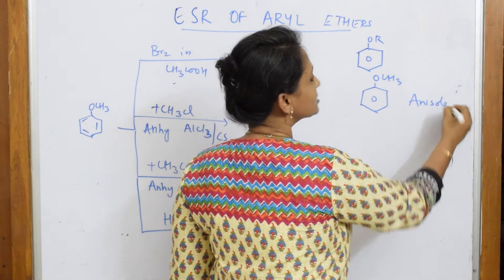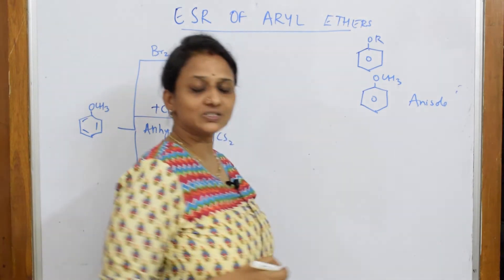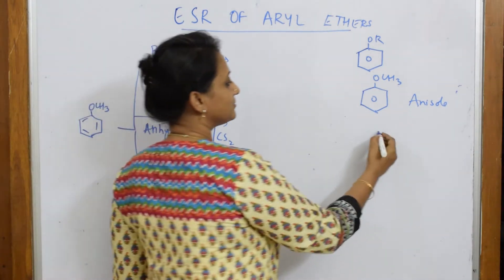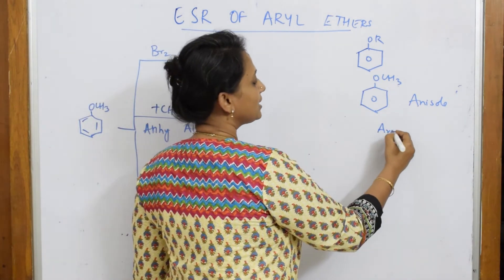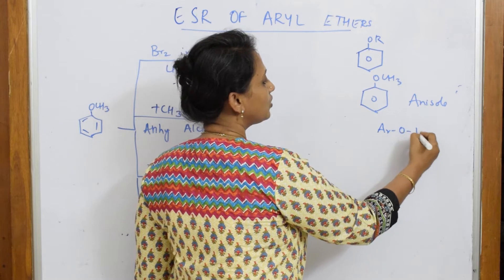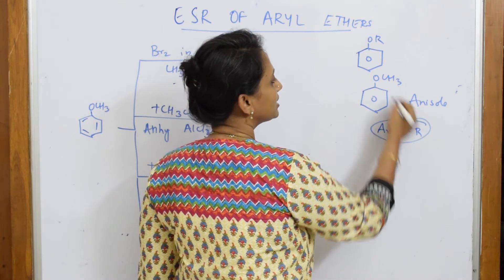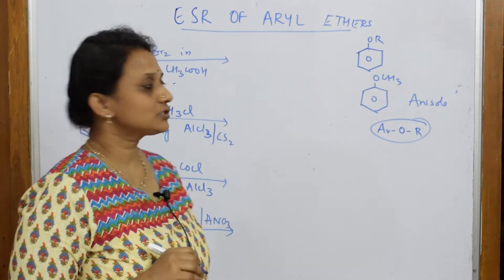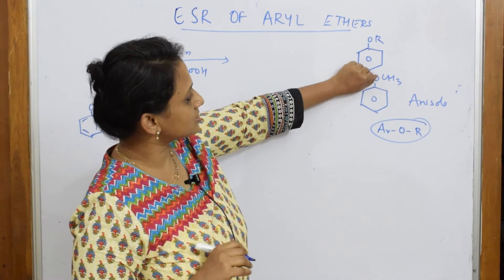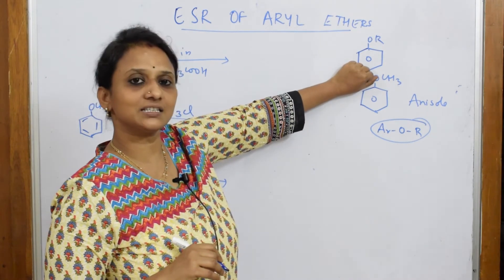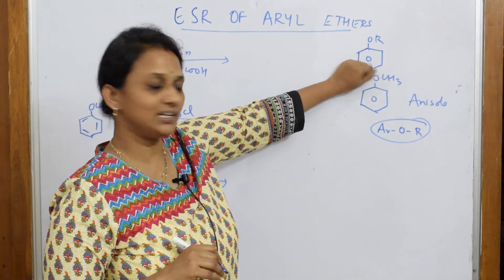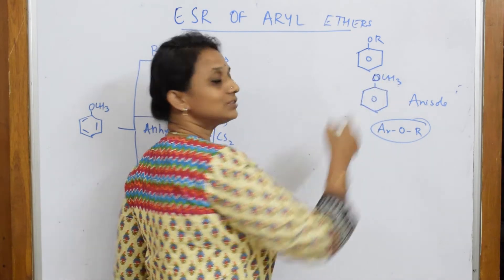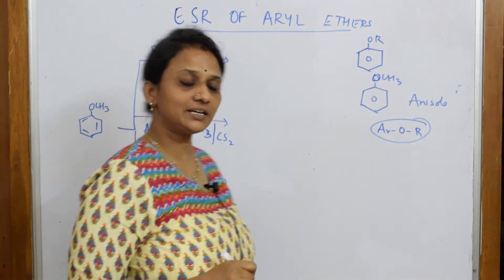Most students when anisole is given to them, they get confused. There is nothing to get confused. Aryl ring with O and R — R can be methyl. So if you are taking out this oxygen and just having CH3, then it is called toluene. If you have O, then it is called anisole.